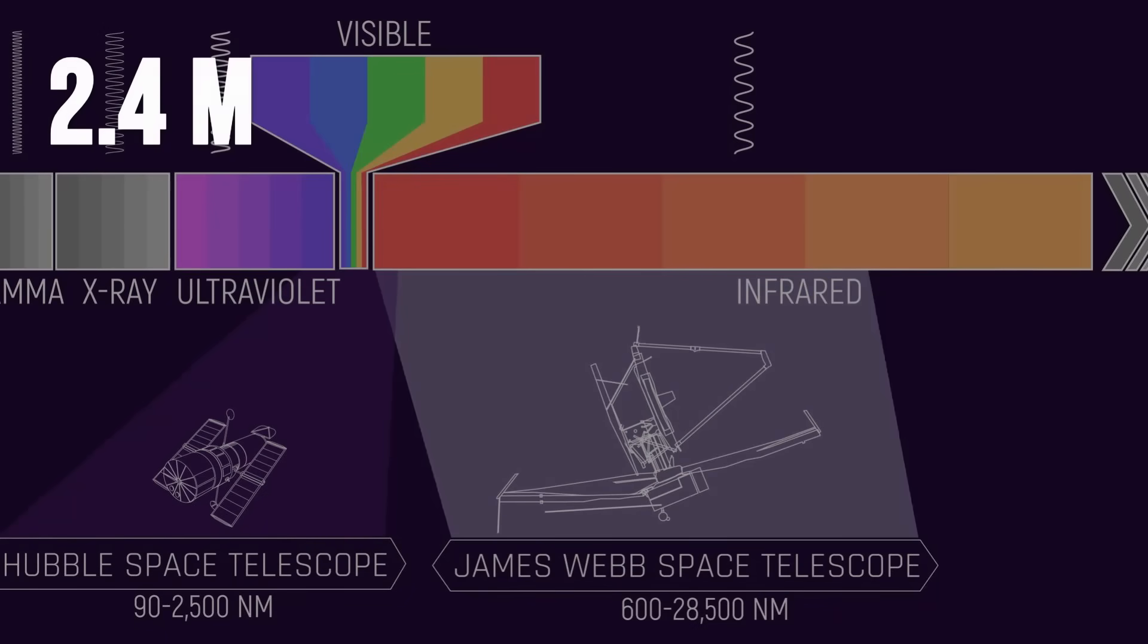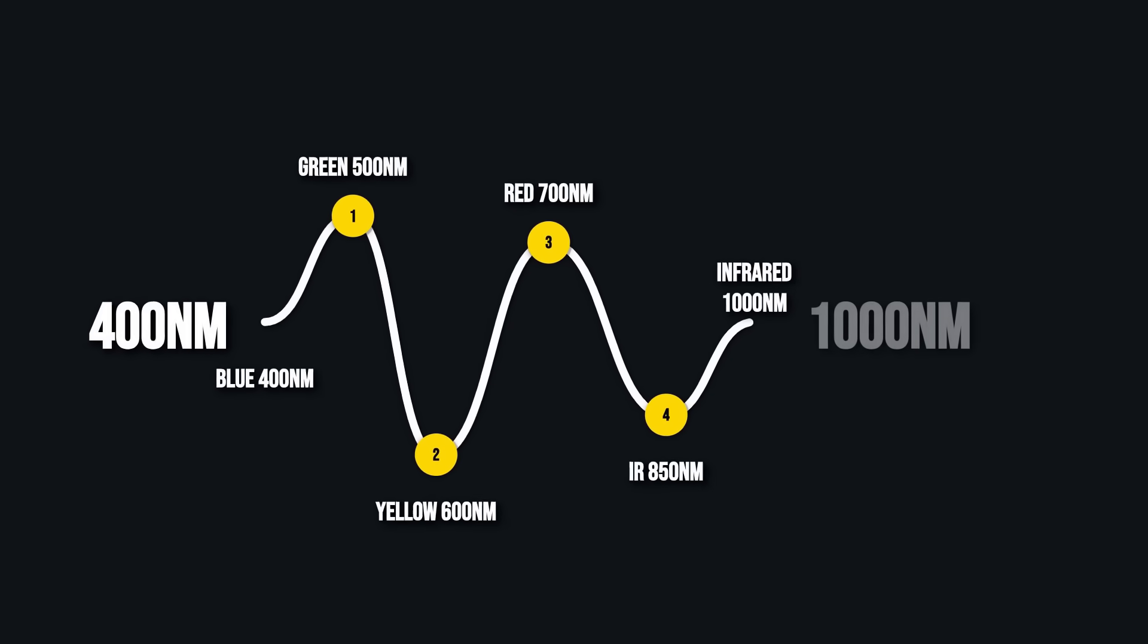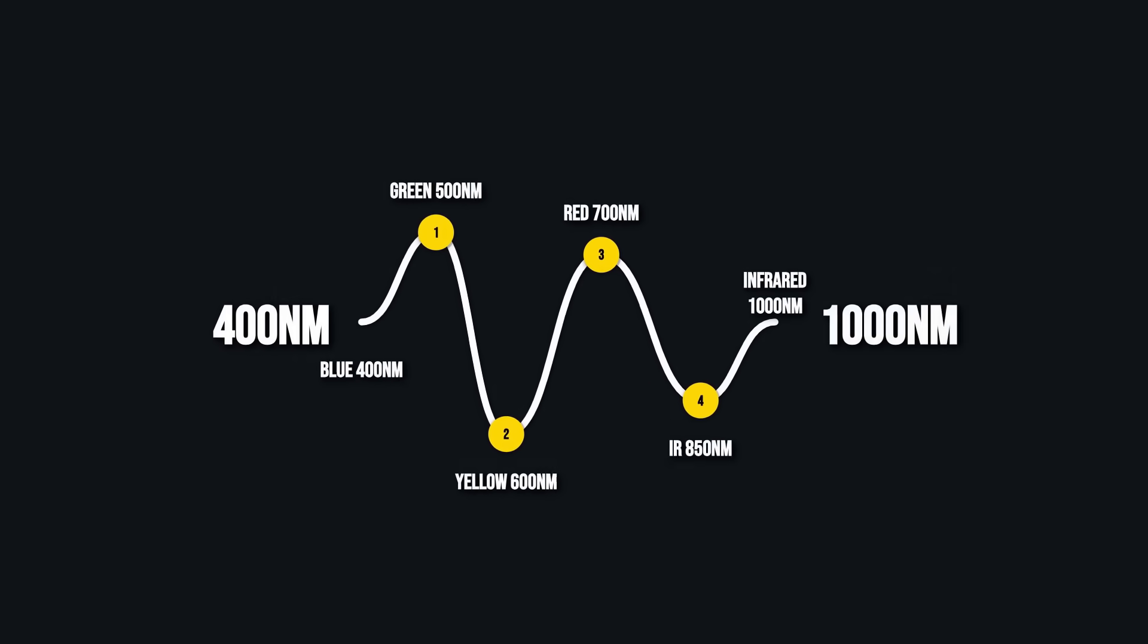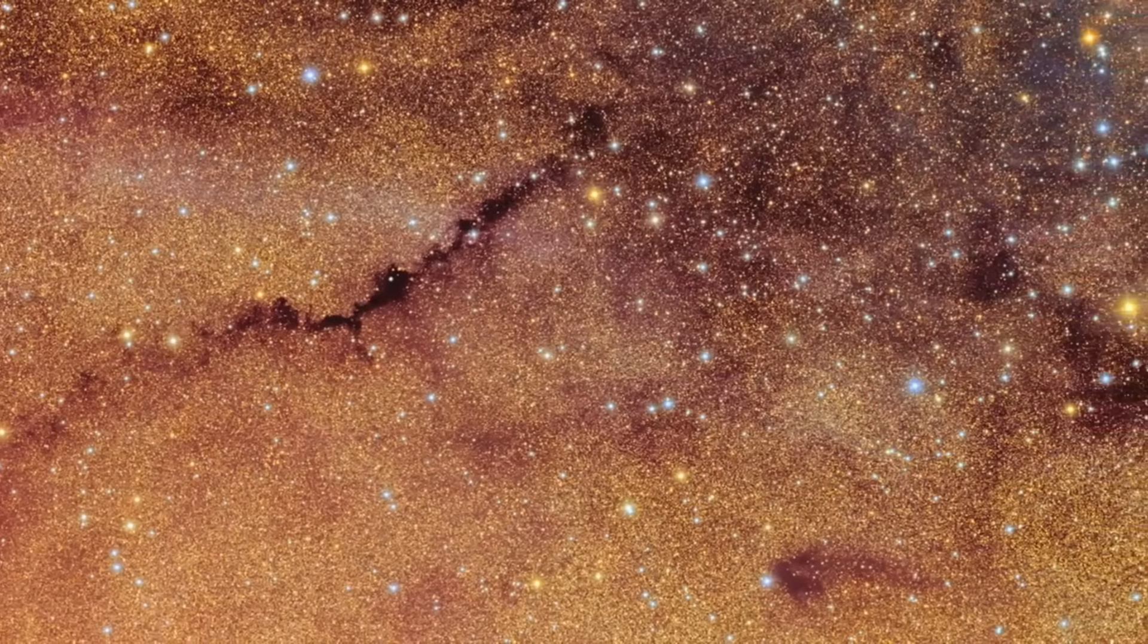Its 2.4 meter mirror captured mostly visible and ultraviolet light. The most ancient galaxies, their light stretched by the expansion of space, had faded into the infrared, beyond Hubble's reach.